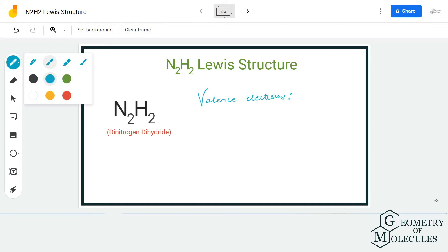Here we have two atoms of nitrogen and two atoms of hydrogen. Each nitrogen atom has five valence electrons in its outer shell, and each hydrogen atom has one valence electron in its outer shell. So in total, we have 12 valence electrons.